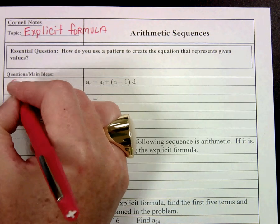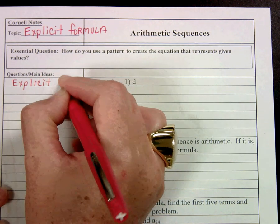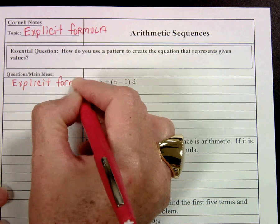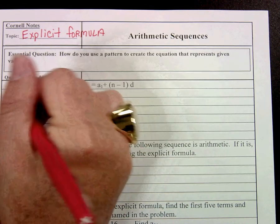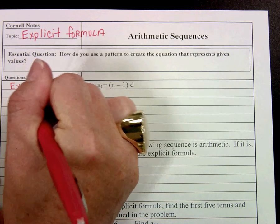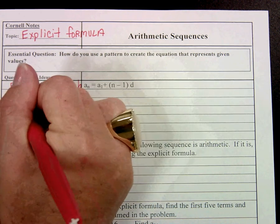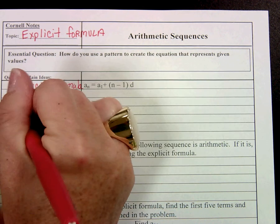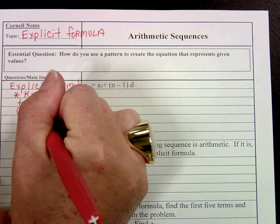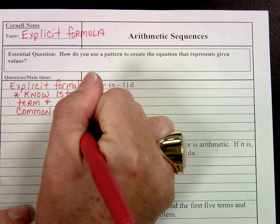One thing I want you to make note of on the side is that to use or write a rule using the explicit formula, we simply have to know the first term of the sequence and the common difference. If we know just the first term and just the common difference, we can actually write a rule.